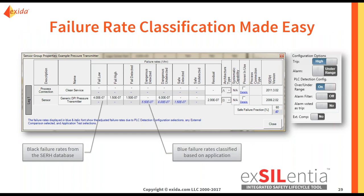Here you see a screenshot of the sensor group properties. It is showing that we have chosen a generic pressure transmitter. For that generic pressure transmitter, we have values for fail low failures, fail high failures, fail detected, and dangerous undetected failures. You can see all of those in black. Those come directly from our Safety Equipment Reliability Handbook, which is embedded in the tool. We have thousands of devices throughout the industry that you can simply choose from a drop-down list, and these failure rates are available right here.